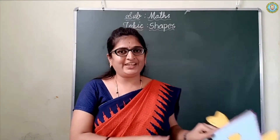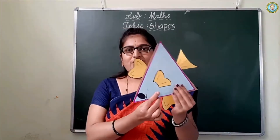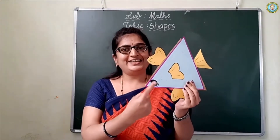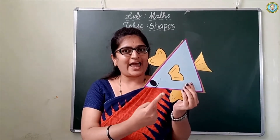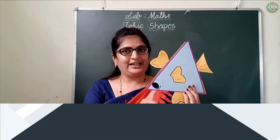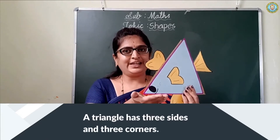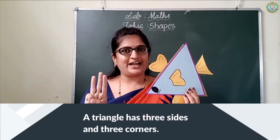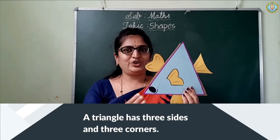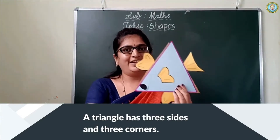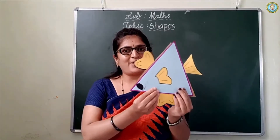Our next shape is coming here. Which shape is this, children? This is a triangle. A triangle has three sides: one, two, three. A triangle has three corners: one, two, three. A triangle has three sides and three corners. Okay, bye-bye triangle.